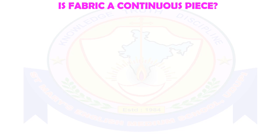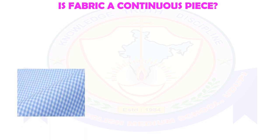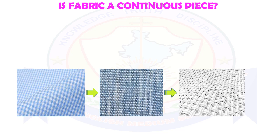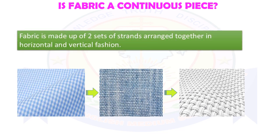Whenever we look at a fabric, it looks like a continuous piece. But is fabric really a continuous piece? Take a closer look at any fabric piece in your home. You will observe that while from a distance fabric looks continuous, it is actually made up of two sets of strands arranged together in horizontal and vertical fashion. So let's find out what these strands are.